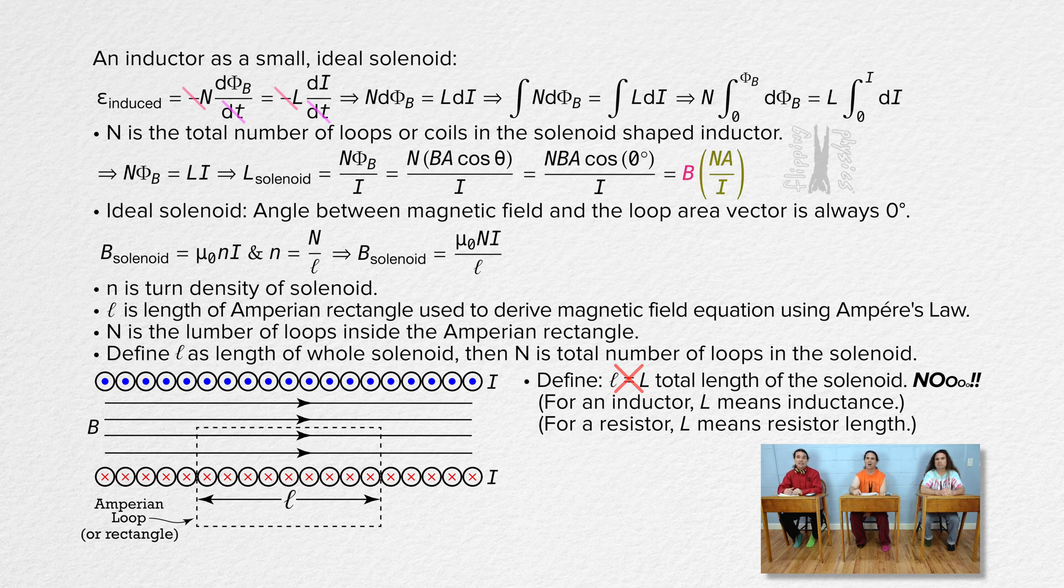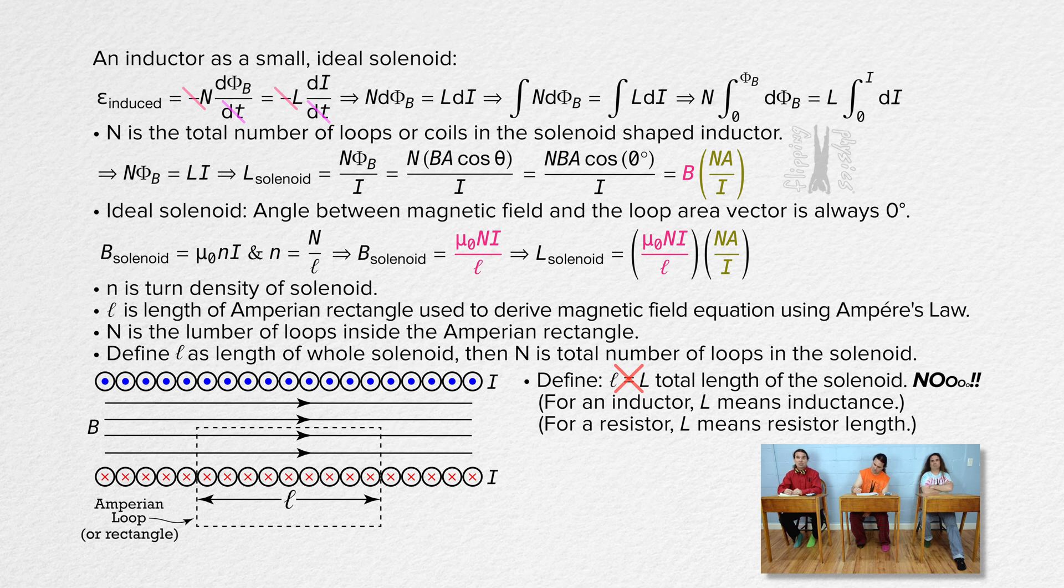Going back to the equation for the inductance of a solenoid, we can substitute the equation for the magnetic field inside an ideal solenoid into that current inside the solenoid cancels out. And we get that the inductance of an ideal solenoid equals the magnetic permeability of free space times the square of the number of turns times cross-sectional area all divided by the length of the solenoid. Nice. Well done.